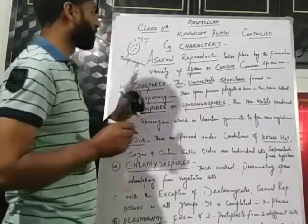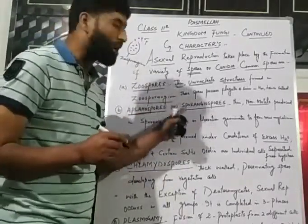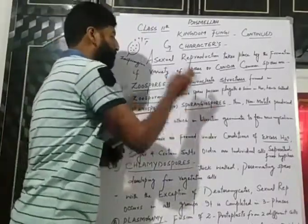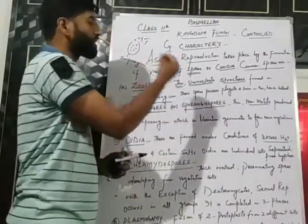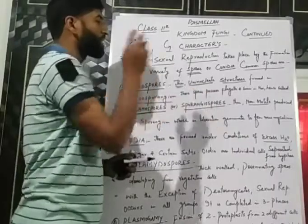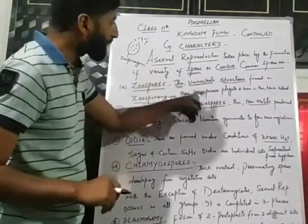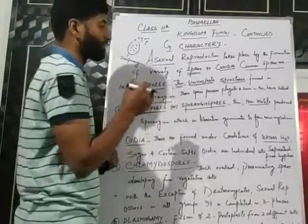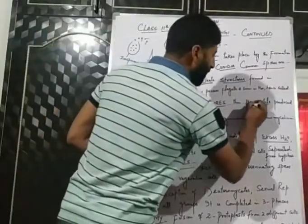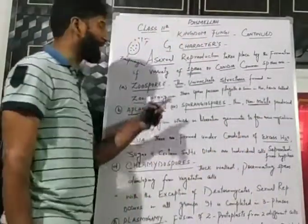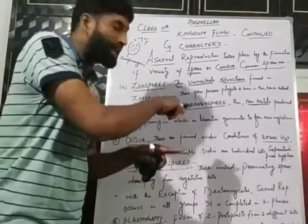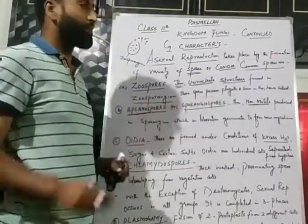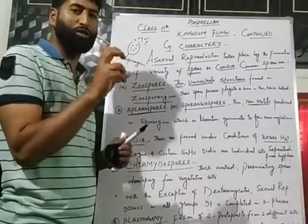The second category is aplanospores, also called sporangiospores. These are also thin, but they are non-motile. Zoospores are motile, whereas aplanospores are non-motile spores.